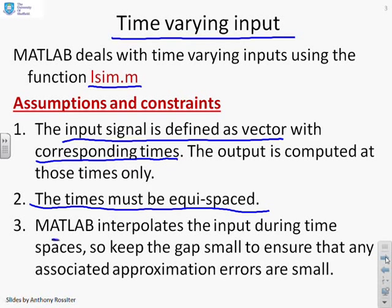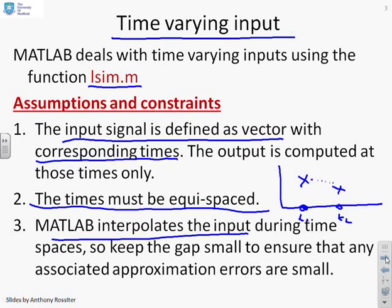And what does MATLAB do? It interpolates the input during the time-spaces. So if, for example, if I do a little sketch here, if that was time t1 and that was time t2, and I said the input was here at t1 and it was here at t2, MATLAB is going to do some form of interpolation between the two to say what the input is doing in between. Now if you want to know what interpolation MATLAB is using, I suggest you look at the built-in help. But the key thing that I'm going to recommend to you is if you keep the distance between t1 and t2 small, then you ensure that any associated approximation errors are also small, and they're not too important.